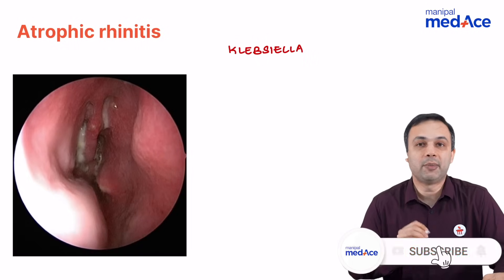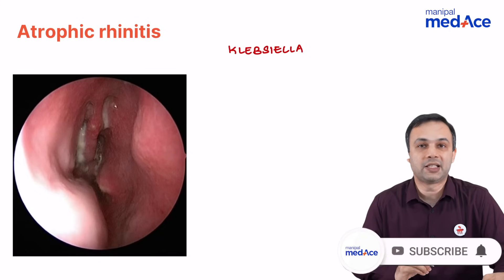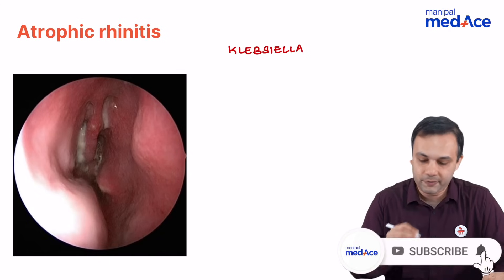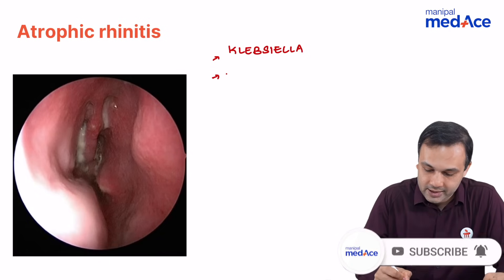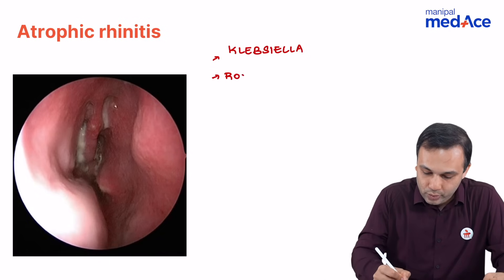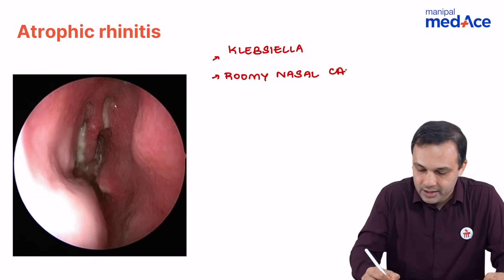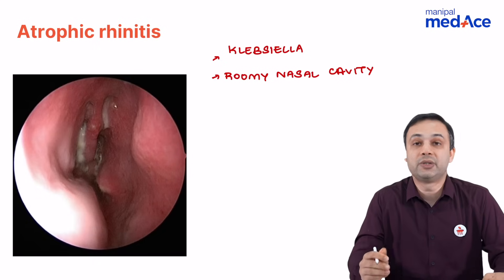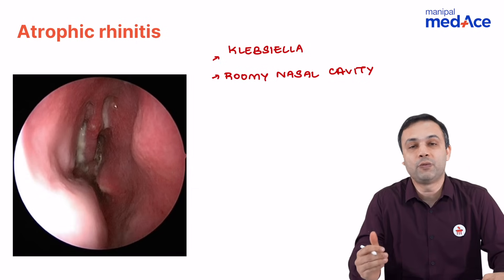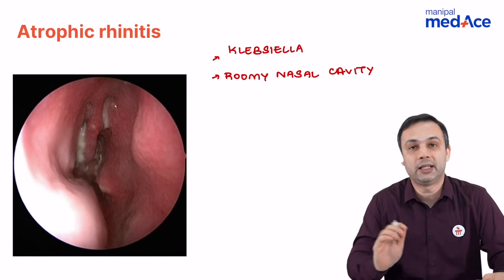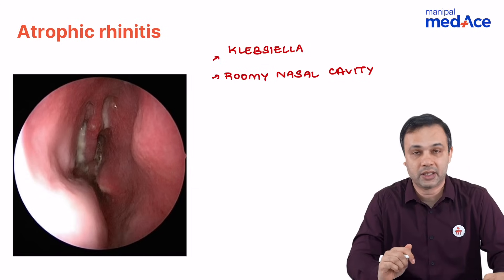Another important point as far as atrophic rhinitis is concerned is a roomy nasal cavity. What do you understand by the term roomy nasal cavity? You are able to see the superior turbinate or the roof of the nasal cavity on anterior rhinoscopy.